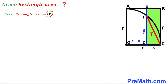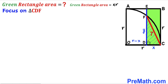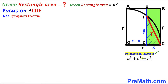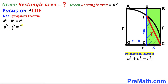Our task is now to find the value of x times r. Let's focus on the small right triangle CDF and apply the Pythagorean theorem. The hypotenuse is seven units, and the two legs are x and y. Filling in the formula: x squared plus y squared equals seven squared, which simplifies to x squared plus y squared equals 49. I'll label this as equation number one.